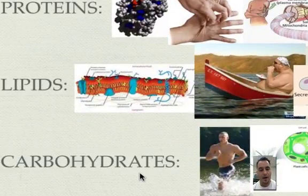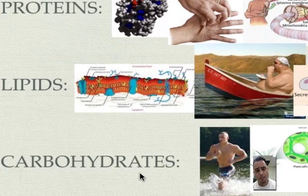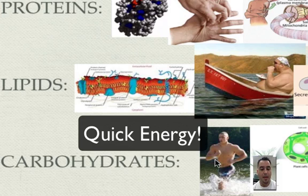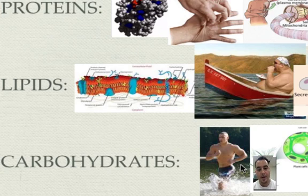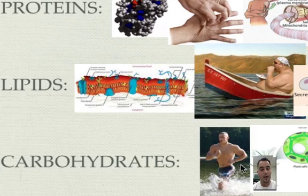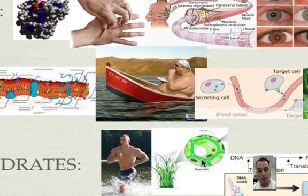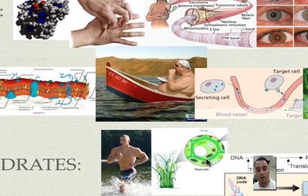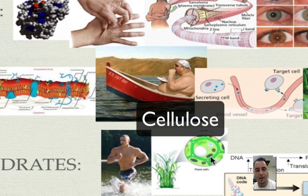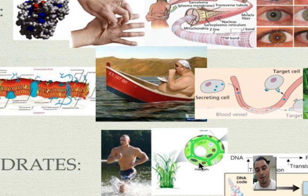Carbohydrates are very important because they provide immediate energy. A runner will load up on carbohydrates before a big run because they give that quick energy you can use to run, do all those things, or even weight lift. Carbohydrates also provide structural support — in a cell wall, you have the carbohydrate called cellulose, which allows the cell wall to be powerful and strong.